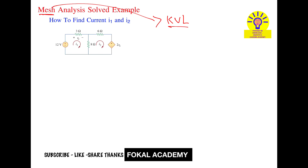So according to Ohm's law, we know that V equal to IR. In KVL, the sum of all voltage drops equals the source voltage in a loop. So like that, we are going to apply Ohm's law at every load — what is the voltage drop equal to source voltage.